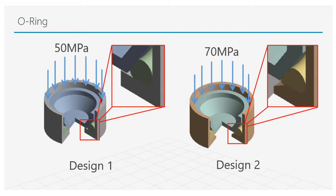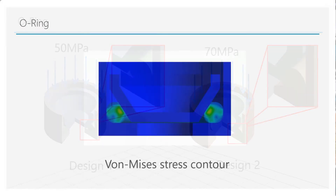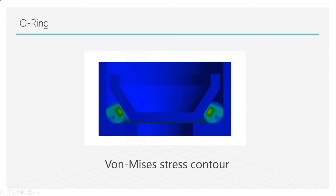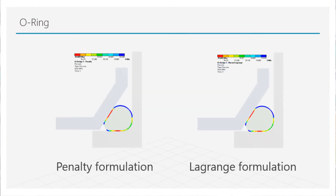In both designs, we will see how the choice of contact formulation may or may not affect the accuracy of results. In Design 1, let's compare the contact pressure calculated using both the Penalty and the Lagrange contact formulations. Here are the contour plots for the contact pressure distributed around the contact regions. From the legend, we can see that there isn't any major difference in calculations between the two formulations. In such a case, we may go with the Penalty formulation as it is more robust due to relatively inexpensive calculations.